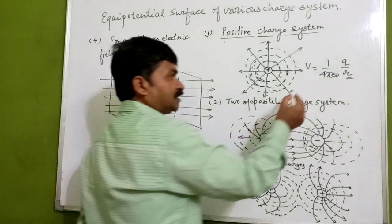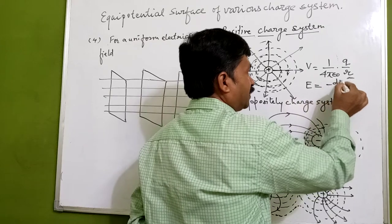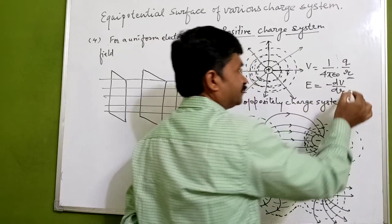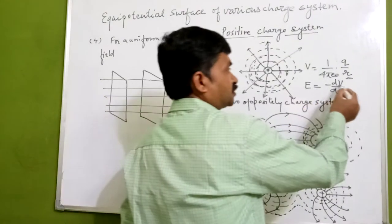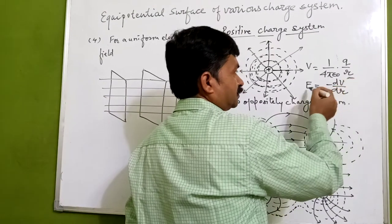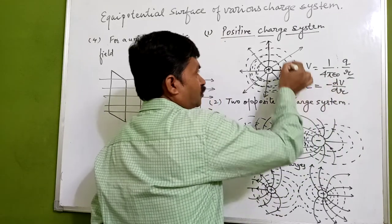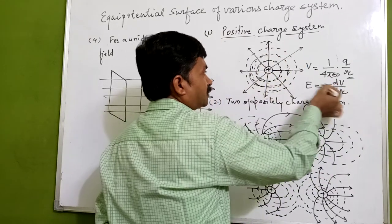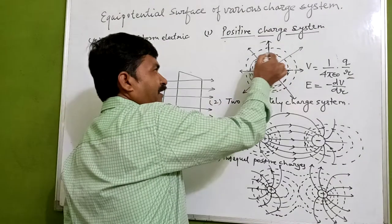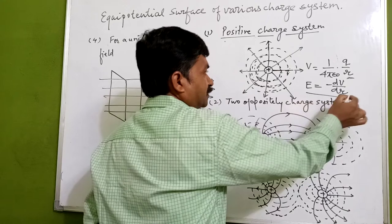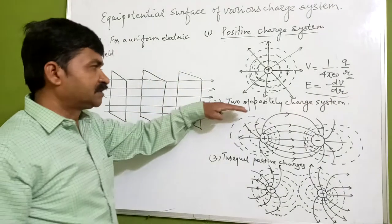We also know that the electric field E equals minus dV by dr. If r is constant throughout this surface — meaning dV is constant — the electric field at any point on the surface is given by this relation as well.